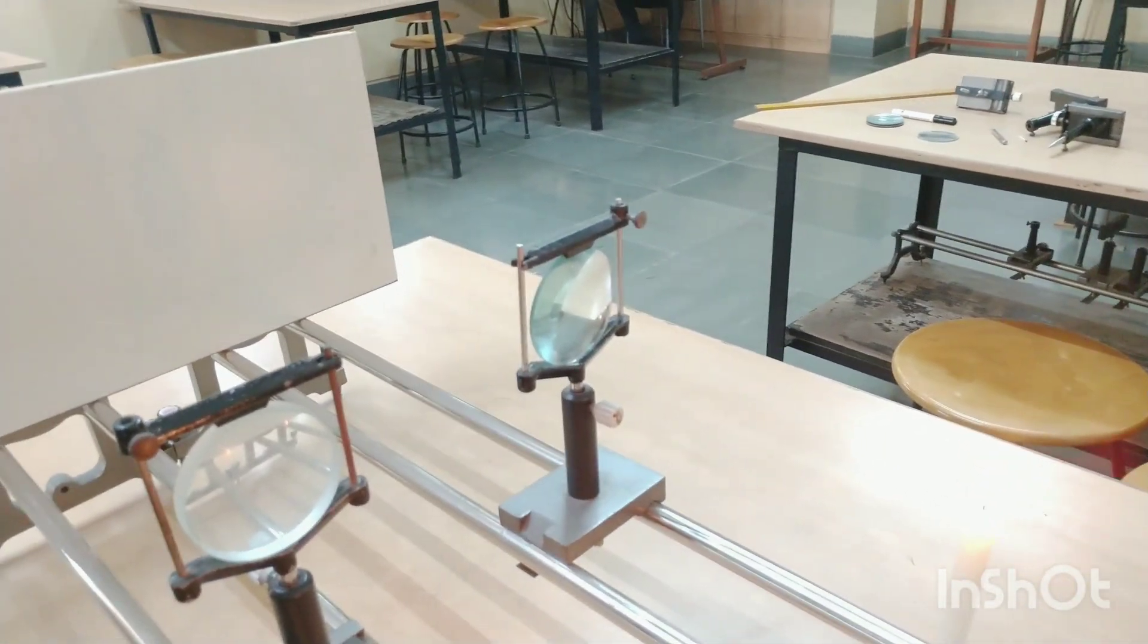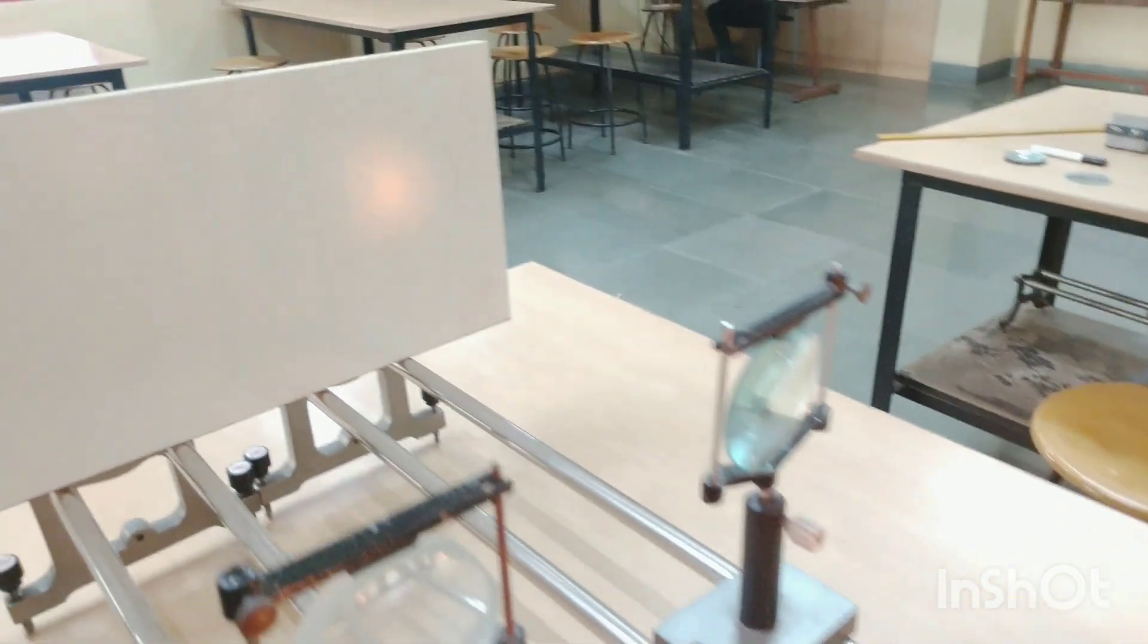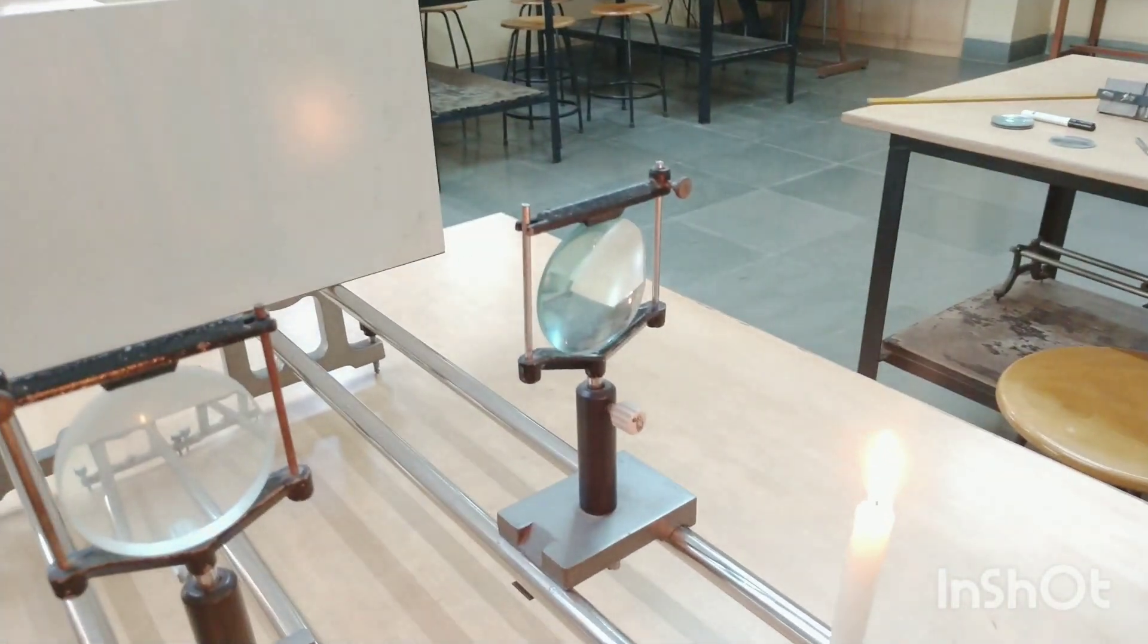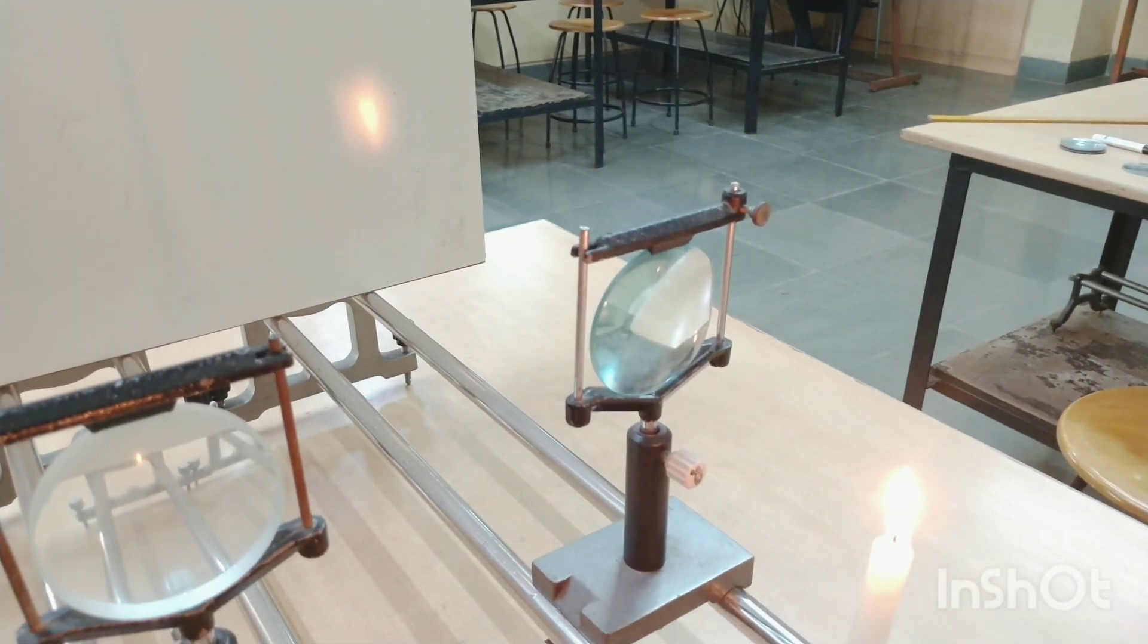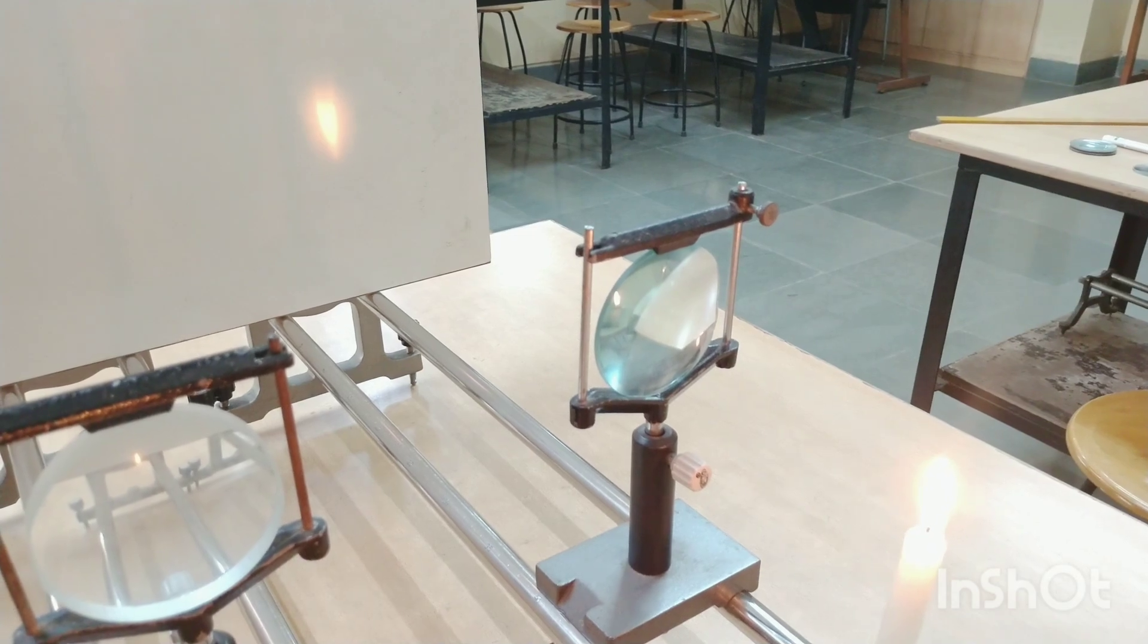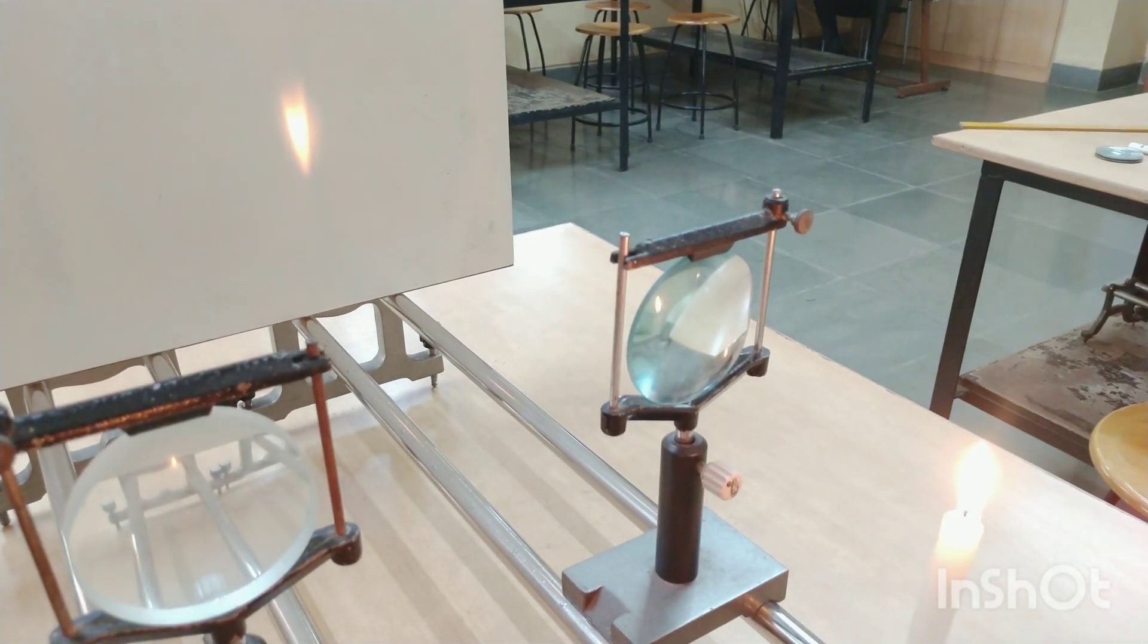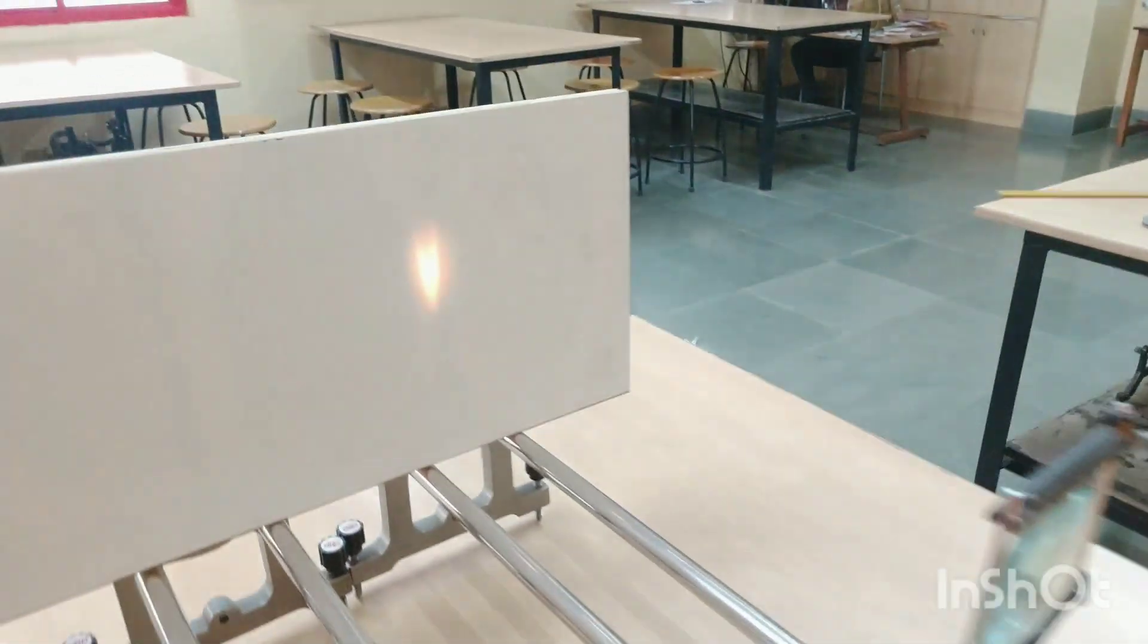Let me try with the convex lens. I'm moving the candle, and as you can see there is some spot formed on the screen. Let me keep moving my candle till I get a clear image. I'm getting something. Yes, I have a clear image of the flame.